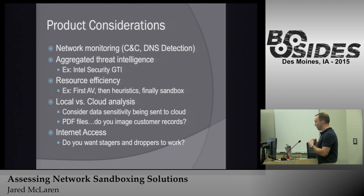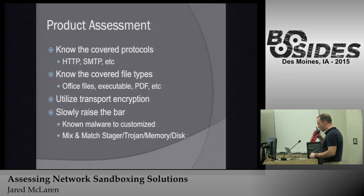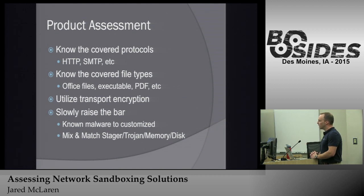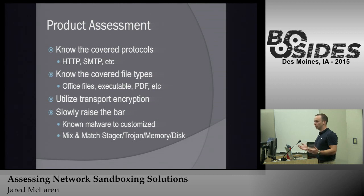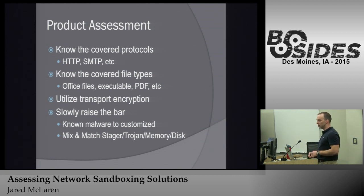Most products cover about the same protocols — HTTP, SMTP, any clear-text protocol they're pretty good at. Anything encrypted is a challenge unless you have an SSL offloader or a centralized endpoint design. Just about all of them cover Office files up to a certain version, and PDFs are pretty much universal. When assessing one of these devices, get to know the environment: what can they do, can they handle TLS, can they detect certificates signed by known bad authorities? And as you assess, slowly raise the bar — start with a known Trojan, make your own executable, and keep stepping it up.